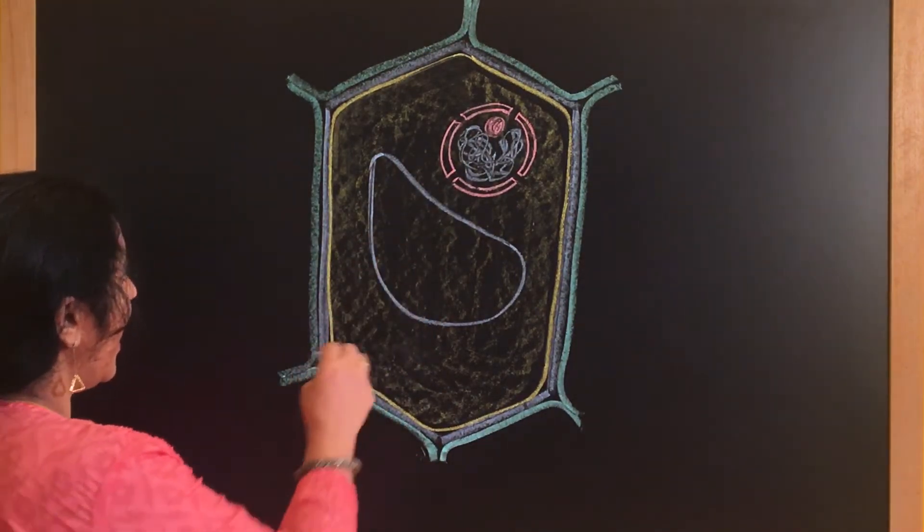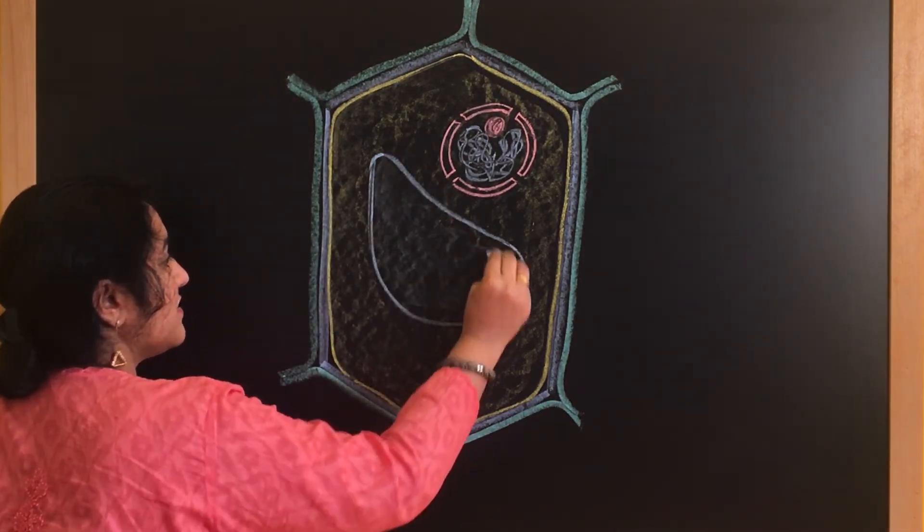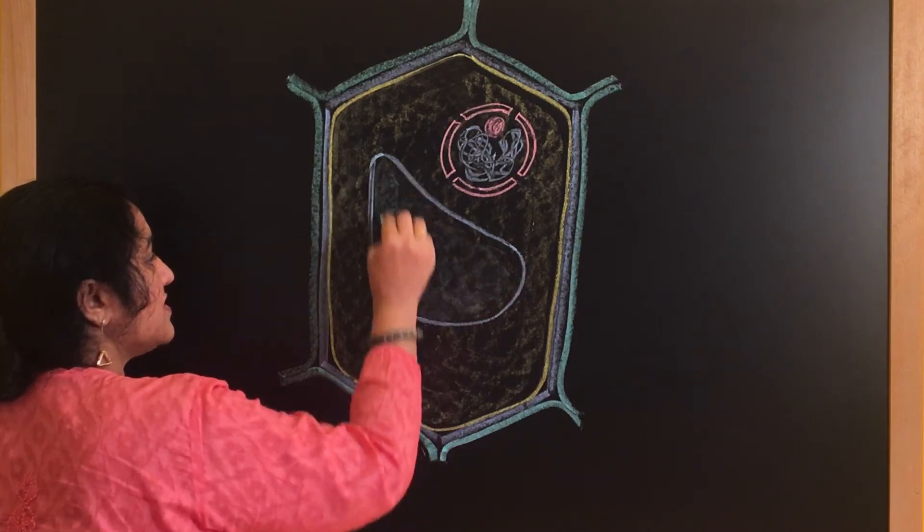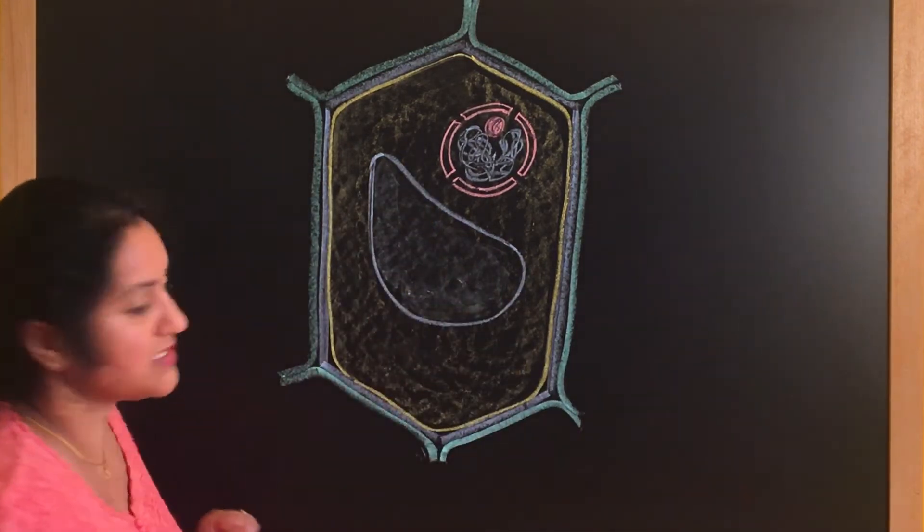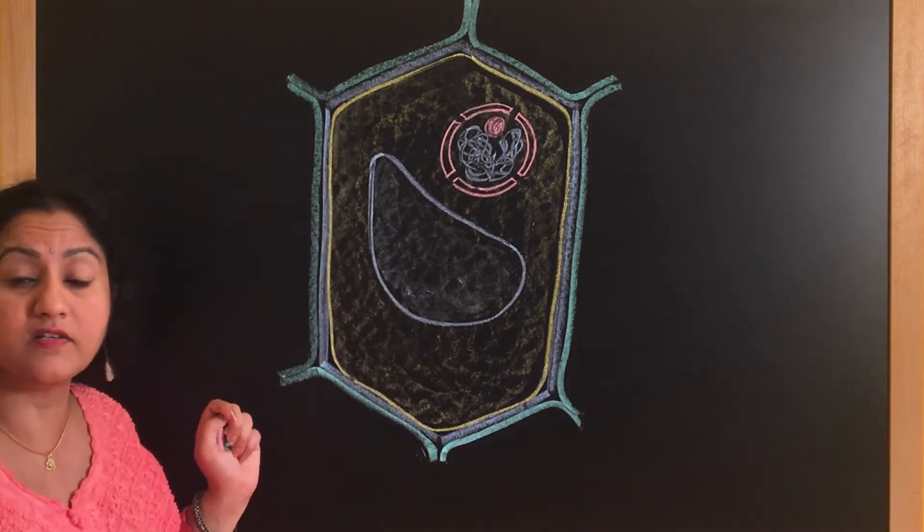Now this is the vacuole. And the vacuole, as I said, is filled with water and lots of other solutes. It is the cell sap which is actually present inside the vacuole. You can just shade that also. Now what are the other organelles present?